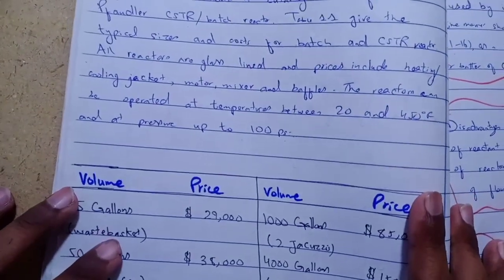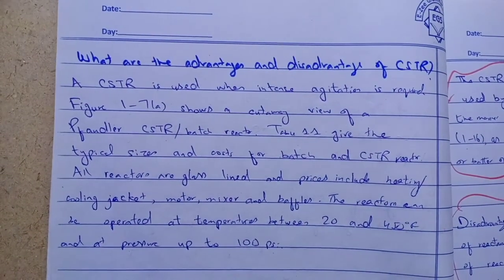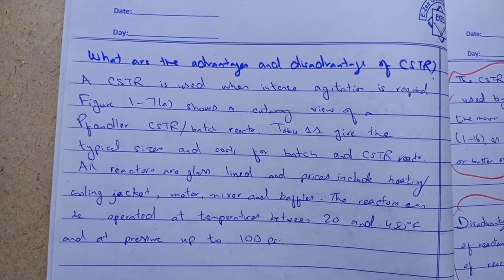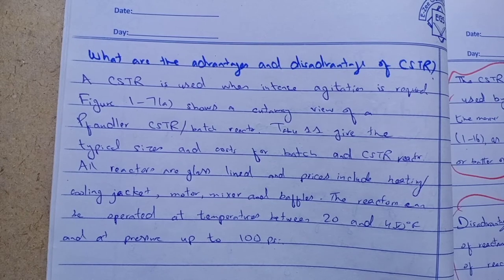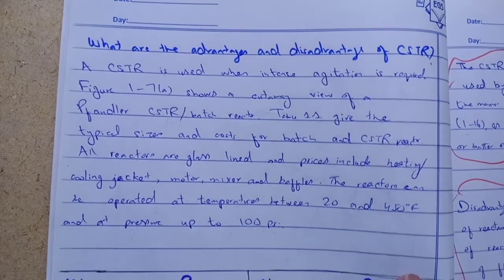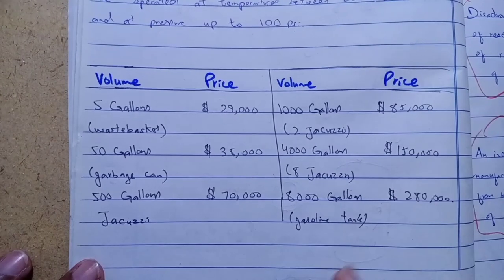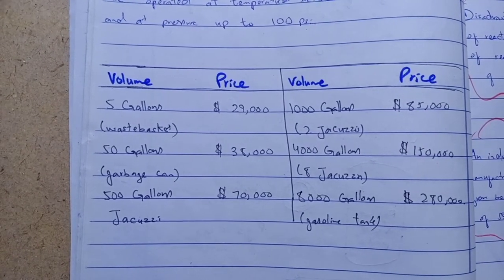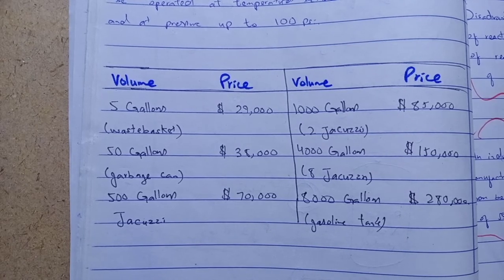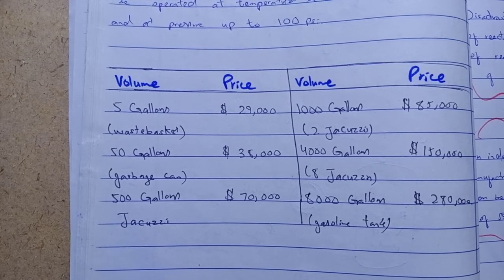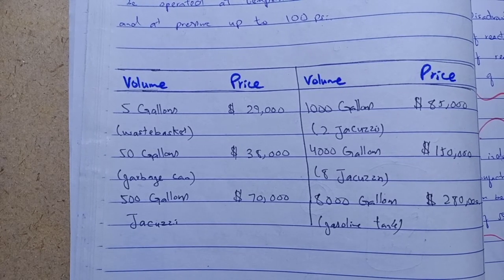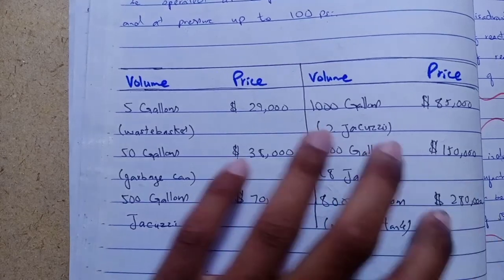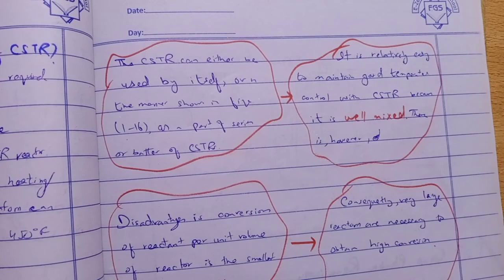A CSTR is used when intense agitation is required — the purpose of the continuous stirred-tank type. This figure shows a view of the batch reactor, and the accompanying table gives volume with respect to price. For example, a five-gallon vessel costs around $29,000. This is a brief explanation of the CSTR.